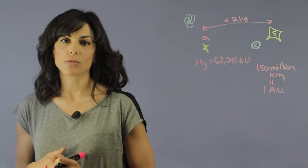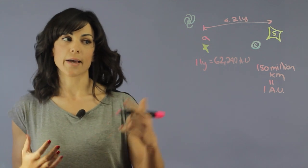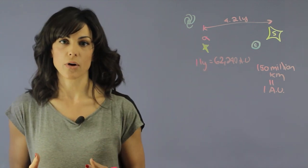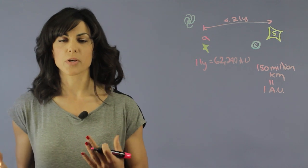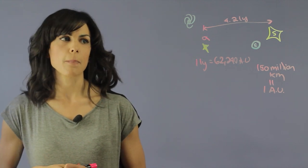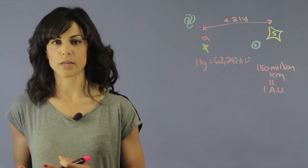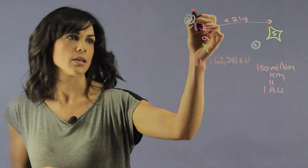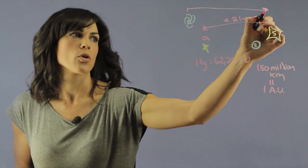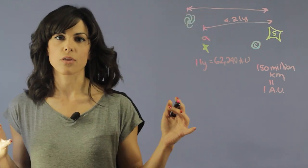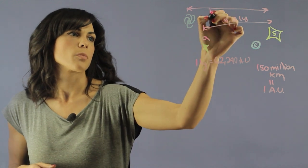Now what happens when we start talking about things that are very far away? I mean this is just the nearest star. So light years kind of remain around because they're a good unit but we also turn into parsecs. So parsecs let's say describe more of a galactic length.